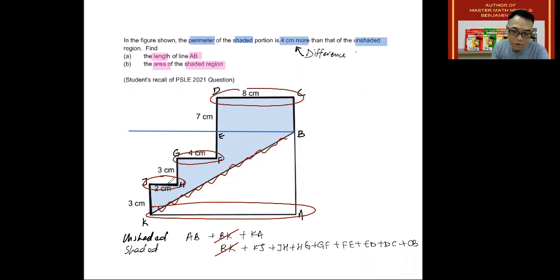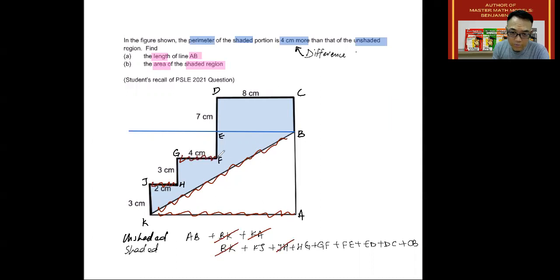And then next, I'm going to try to eliminate KA, this line, together with lines that are equivalent to KA, which is JH, GF, and DC. So these three lines will add up to form this long line here. So I'm going to eliminate KA, and when I do that, I also eliminate JH, GF, and DC.